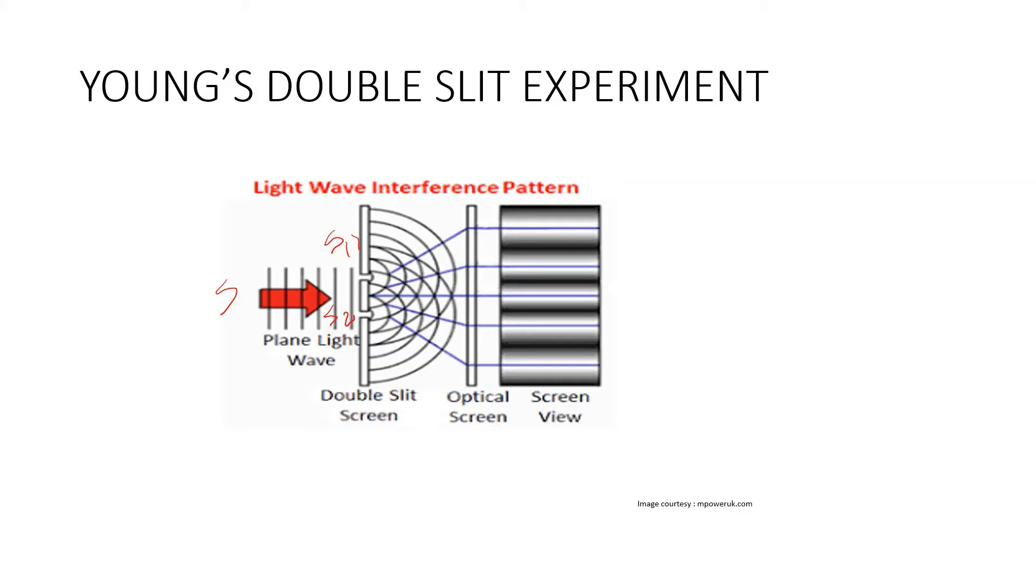The light passes through these slits and falls on the screen kept at a distance from the slits S1 and S2. The interference patterns, alternate dark and bright bands, appear on the screen only when both slits S1 and S2 are open. The interference is due to the superposition of light waves.